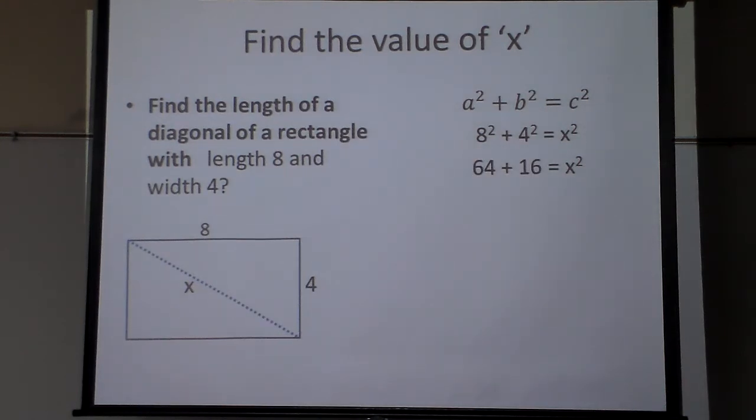8 squared is 64, 4 squared is 16, so that's 80. Now, wait a minute, I can't square root 80. I mean, if it was 81 it would make 9, so I know my answer is really close to 9 but not quite.